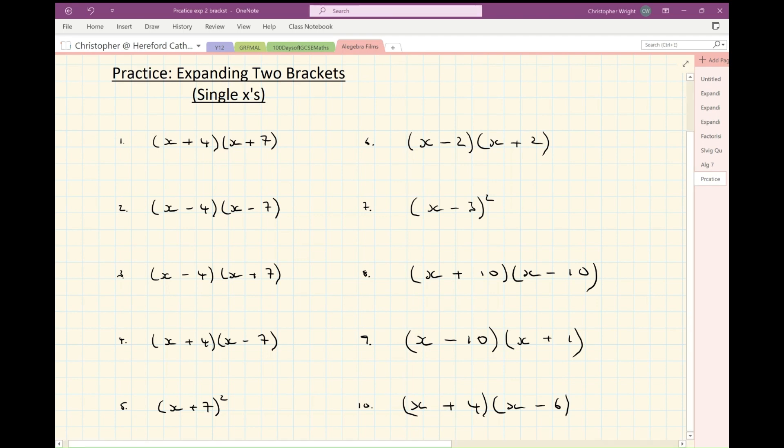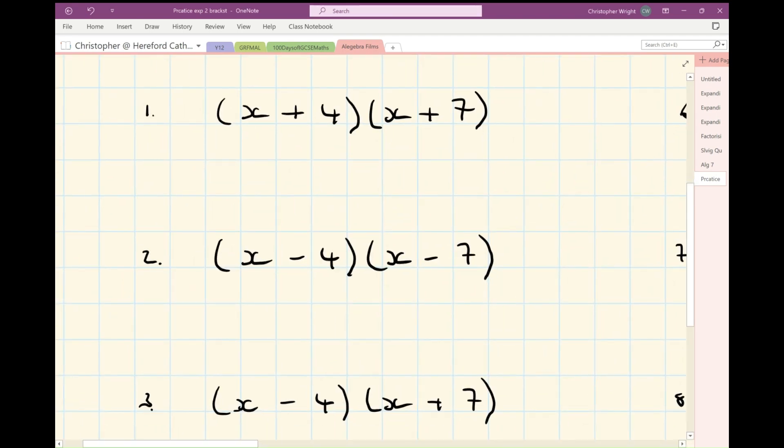Okay, number one, I am going to have an x squared. Now I've got four x's from the nose, plus another seven x's gives me 11x, plus 28 four sevens at the end.